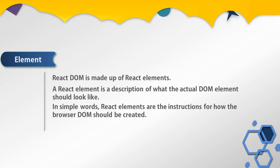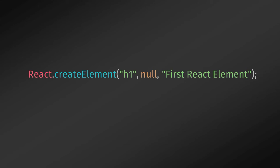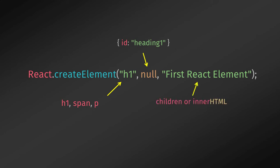In simple words, React elements are the instructions for how the browser DOM should be created. We can create a React element to represent an h1 heading tag using the React.createElement method. The first argument defines the type of element we wish to create, like h1, span, or paragraph — you can also define components. The second argument represents the element's properties. The third argument represents the element's children, or the HTML text.